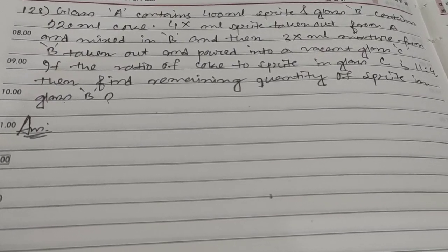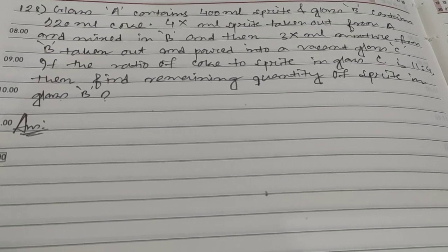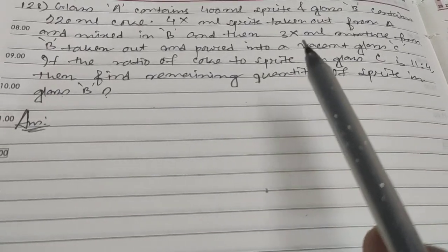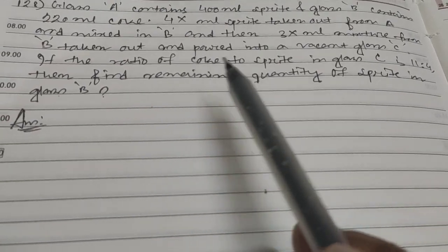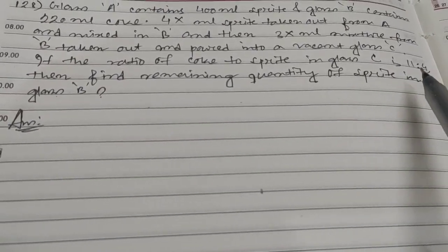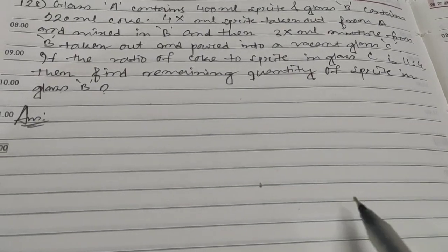Then 3x milliliter mixture from B is taken out and poured into a vacant glass, which is empty glass C. If the ratio of coke to sprite in glass B is now 11:4, then find the remaining quantity of sprite in glass B.